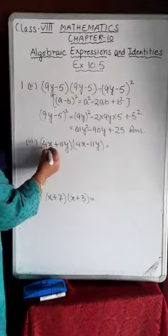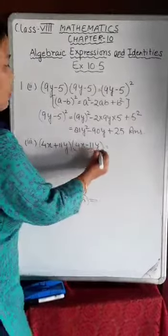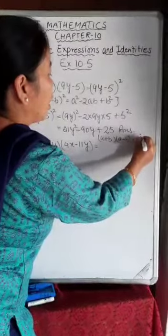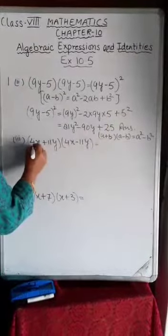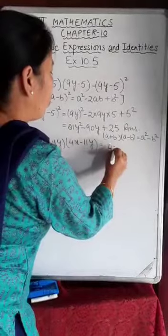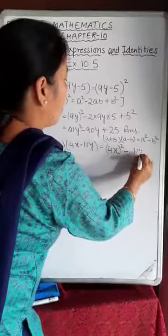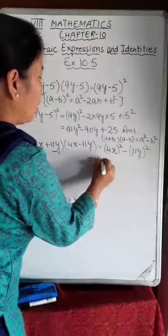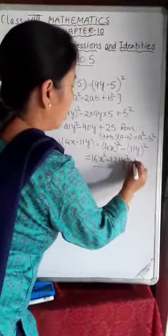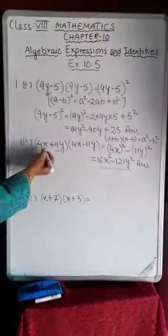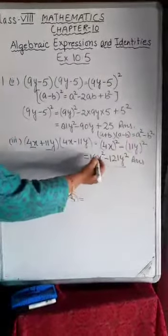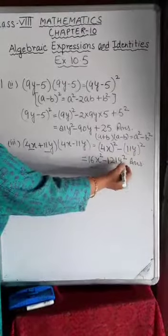The third part is (4x + 11y)(4x − 11y). Using identity 3, (a + b)(a − b) = a² − b², with a = 4x and b = 11y: (4x)² − (11y)² = 16x² − 121y².